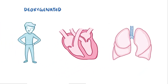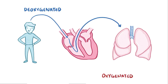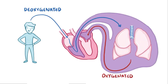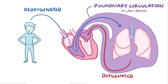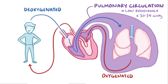Normally, deoxygenated venous blood from the body goes into the right atrium of the heart. From there, it goes into the right ventricle and then gets pumped to the lungs where it's reoxygenated as it goes through the pulmonary circulation. The pulmonary circulation is a low-resistance system with pressures ranging between 10 and 14 mmHg. After going through the lungs, oxygenated blood goes into the left atrium and then into the left ventricle and finally gets pumped back out to the body.